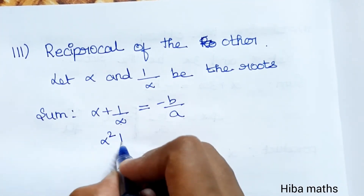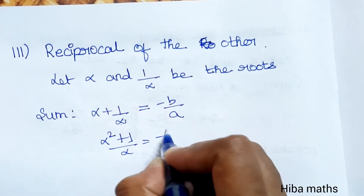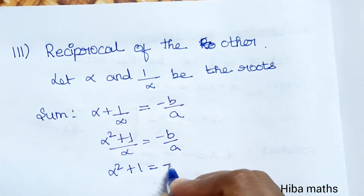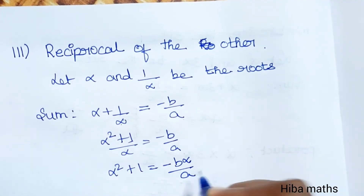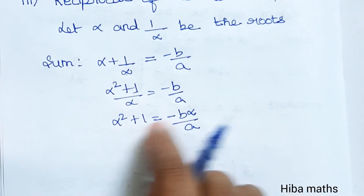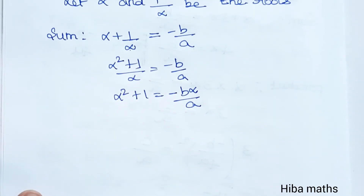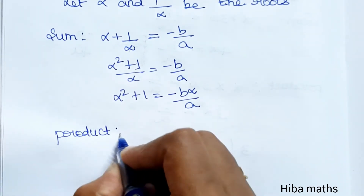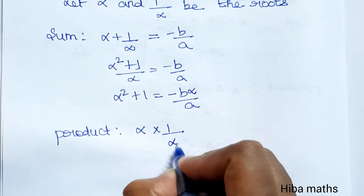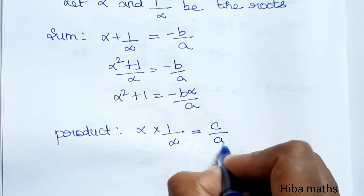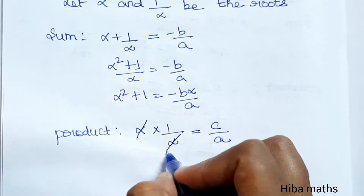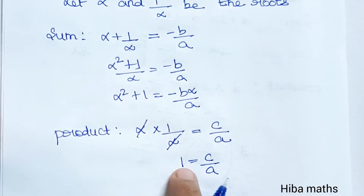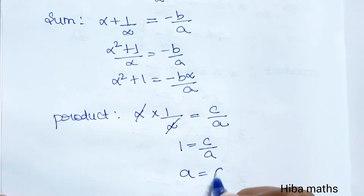Product of roots: α × (1/α) = C/A. The α terms cancel, giving 1 = C/A. Multiplying both sides by A gives A = C.